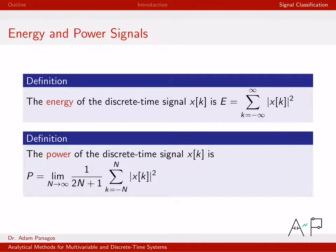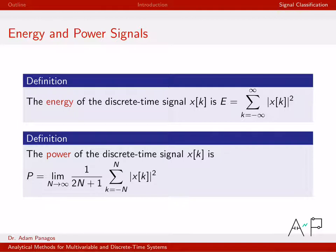The definition of power looks very similar. In the inner summation you sum the magnitude squared of the signal, but there's a limit out front: you take the limit as N gets large. The sum runs from −N to N, giving 2N+1 terms, and you divide by that same 2N+1 — so you're taking an average of the magnitude squared and then letting N grow to cover all time. This is why periodic signals are power signals: averaging a repetitive signal over all time gives a finite average value. That wraps up the core definitions of energy and power signals; the next video will work through a detailed computation example.